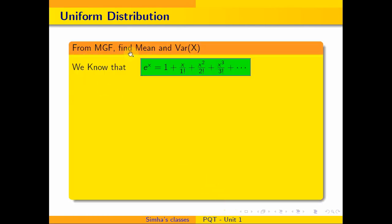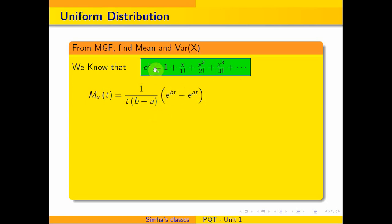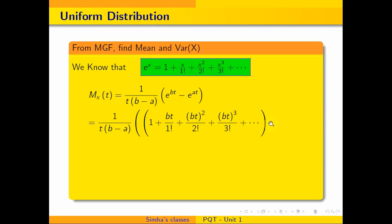Now the MGF will be used to find the mean and variance. We know that e^x can be expanded as 1 + x/1! + x²/2! + x³/3! + ... So we write the MGF as (1/(t(b−a))) times (e^(bt) − e^(at)). Expanding e^(bt) using the formula, substituting x with bt: 1 + bt/1! + (bt)²/2! + (bt)³/3! + ...